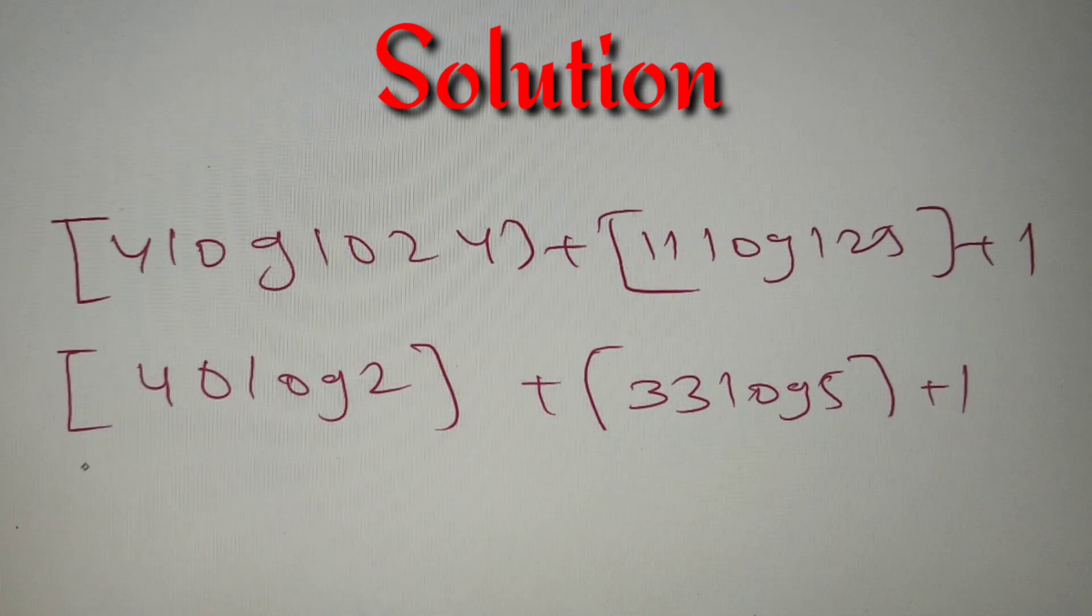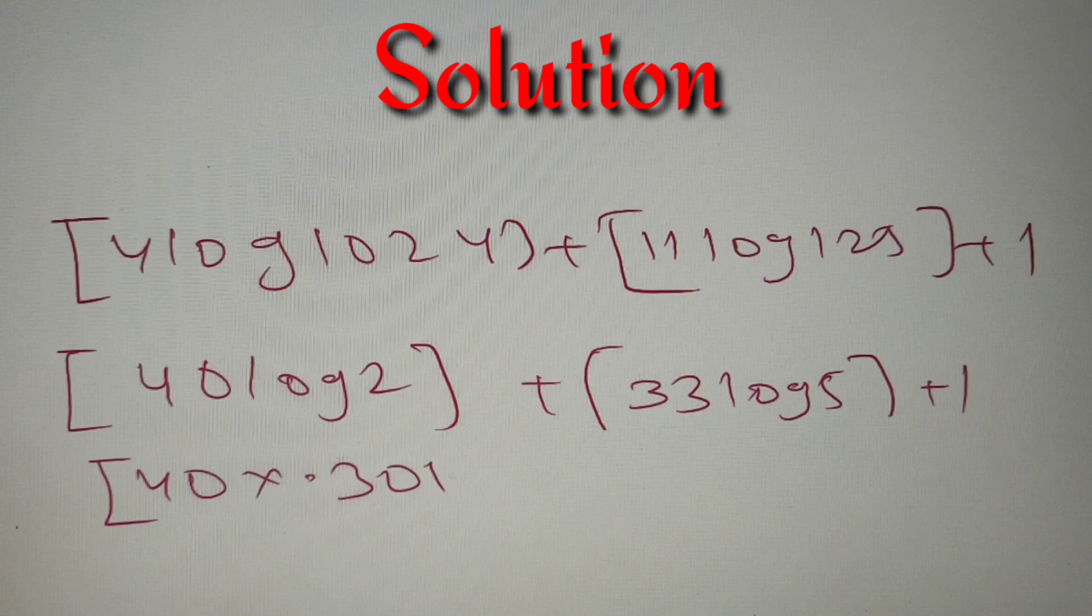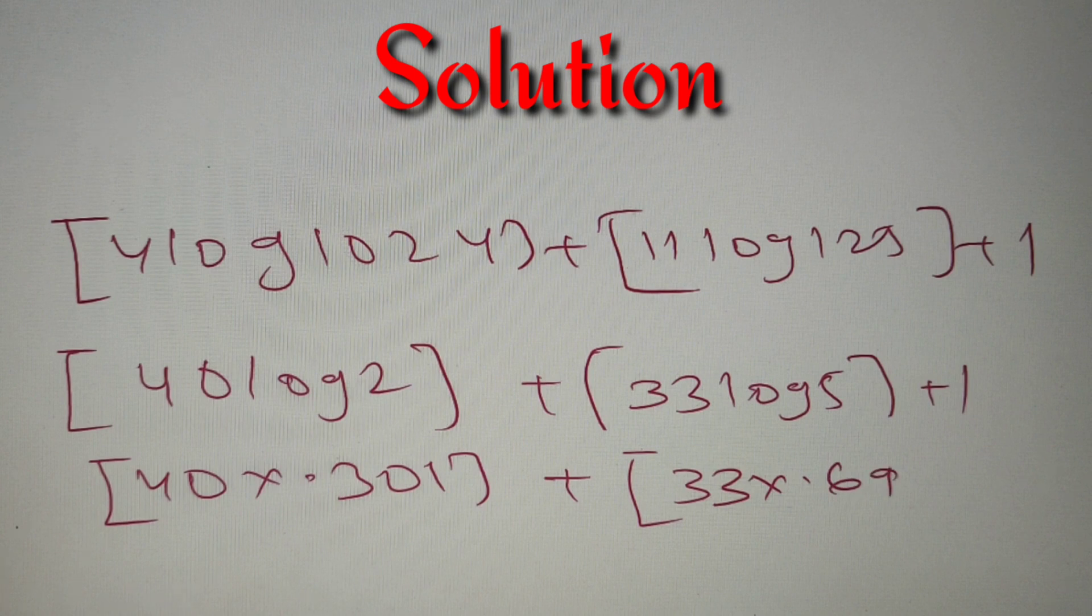So putting the values in the greatest integer function, we'll get [40 × 0.301] in the first greatest integer function and we'll get [33 × 0.69] in the second greatest integer function, and you must remember to add 1.